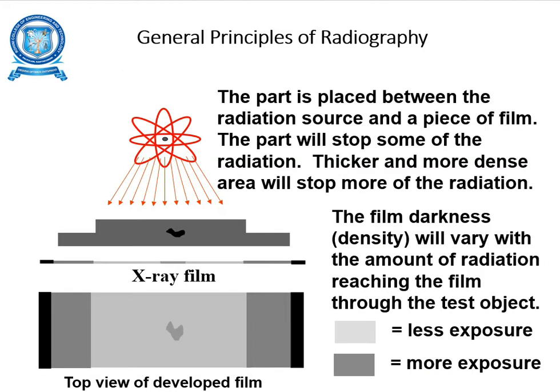Coming to the general principles of radiography: the test specimen to be tested, having a defect, is placed between the x-ray source and the x-ray film. The test specimen stops some of the radiation — thicker and more dense areas stop more radiation. The film darkness varies with the amount of radiation reaching the film through the test specimen. Less exposure areas appear light in color and more exposure areas appear dark.